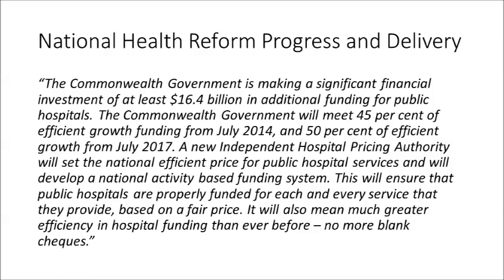As an example of recent Commonwealth policy undertaking, the National Health Reform Progress and Delivery document in 2011 makes the following claims. The Commonwealth Government is making a significant financial investment of at least $16.4 billion in additional funding for public hospitals. The Commonwealth Government will meet 45% of efficient growth funding from July 2014 and 50% of efficient growth from July 2017. A new independent hospital pricing authority will set the national efficient price for public hospital services and will develop a national activity-based funding system. This will ensure that public hospitals are properly funded for each and every service that they provide based on a fair price. It will also mean much greater efficiency in hospital funding than ever before. No more blank checks. This section will guide you through parts of the current Commonwealth Health Reform Agenda.